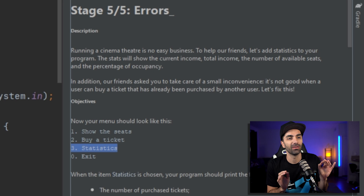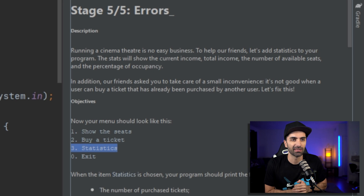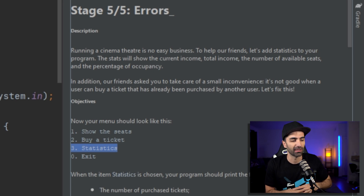For the fifth and final stage, we give the user another menu option called 'statistics' — it prints the total number of tickets purchased, total income so far, and handles errors like trying to buy a ticket that's already been bought. We are not going to do that in this video — I'll leave that as a challenge for you. Use my link below to get your first month completely free. Hopefully this video gave you an insight into building a real-world application and learning a language on the fly while building it. If you have any questions leave them in the comments, make sure to like the video, and as always, keep on coding.